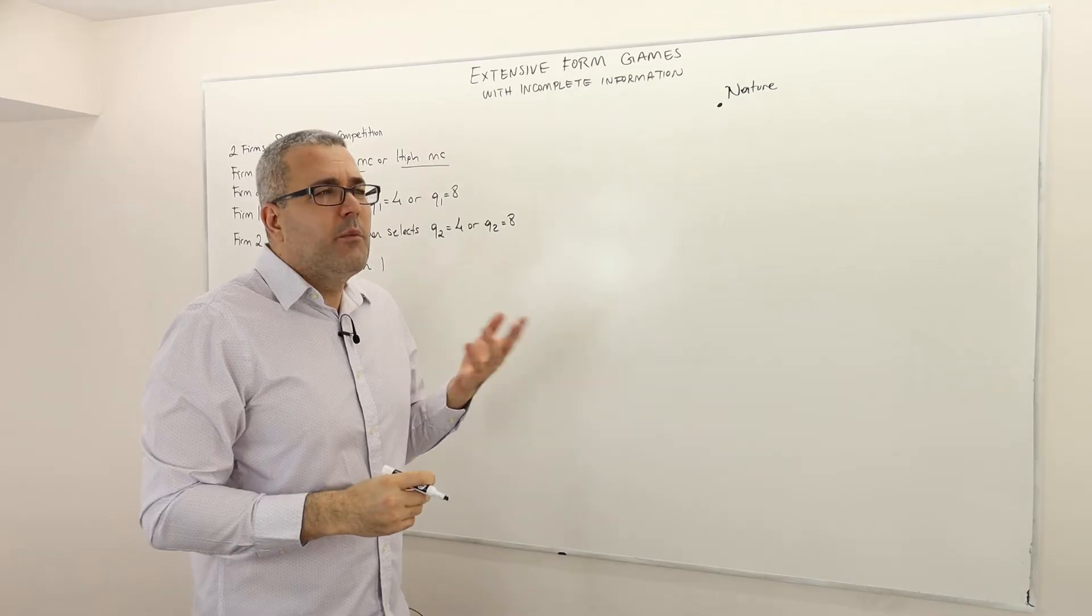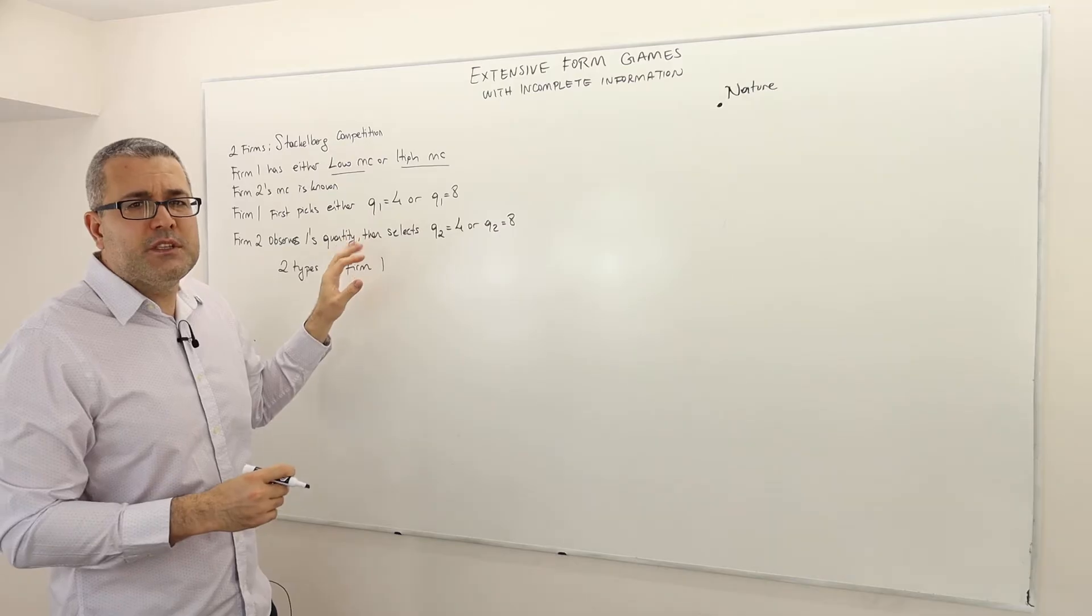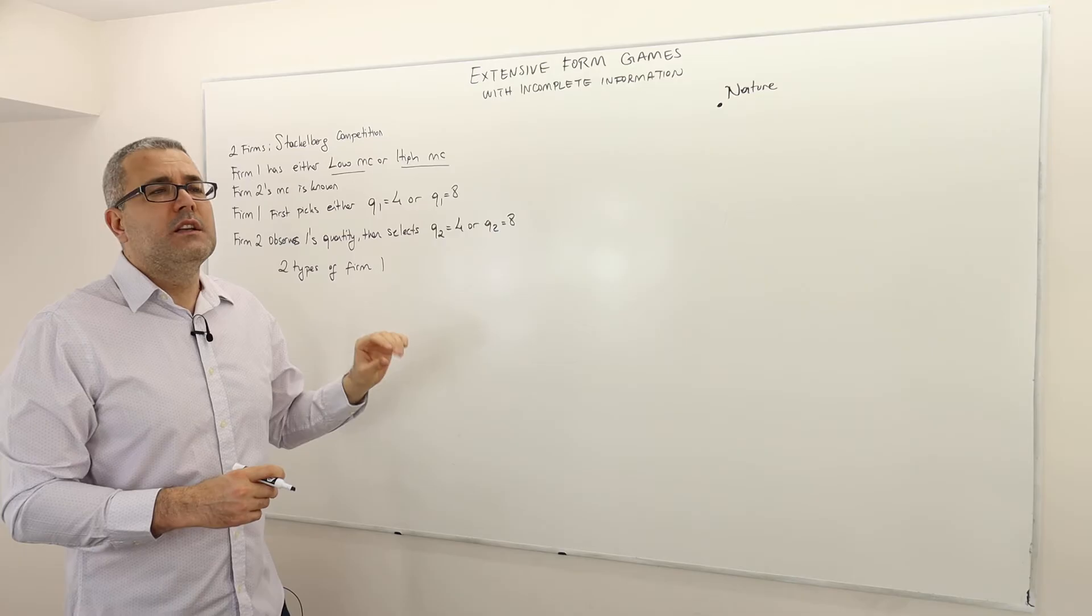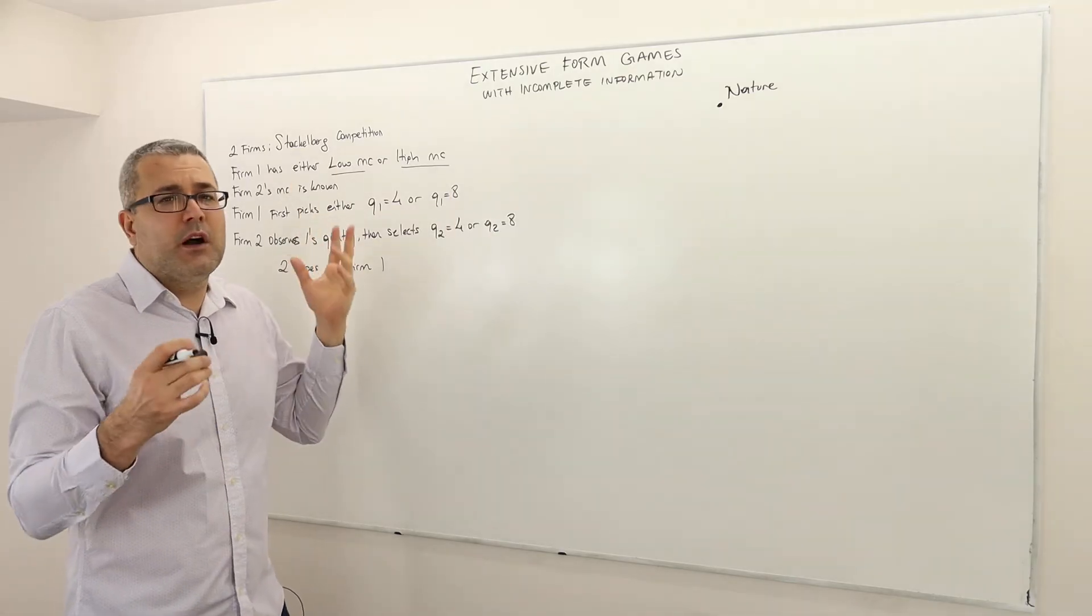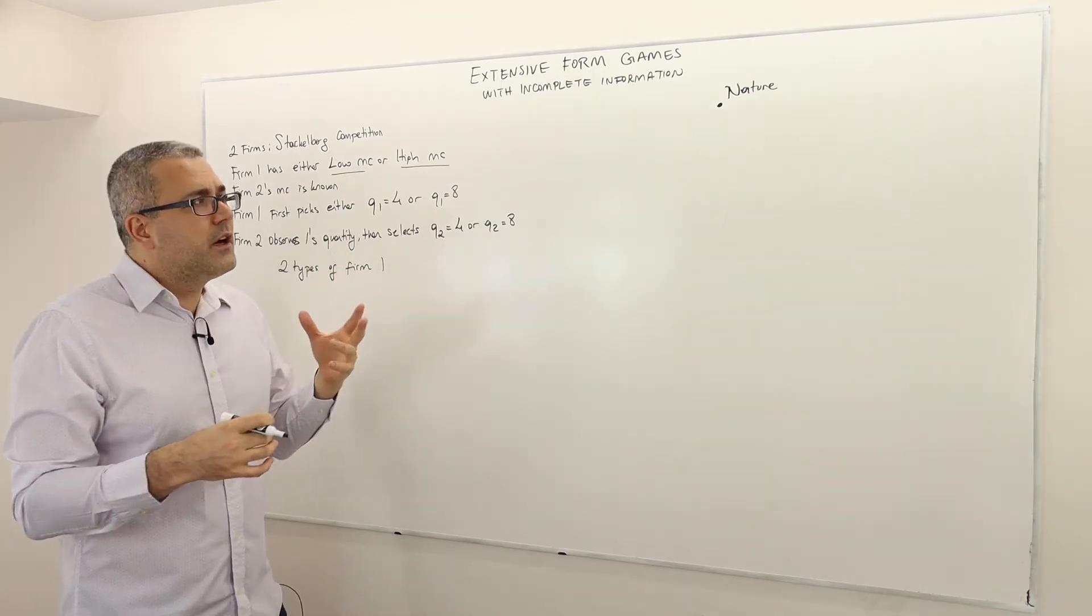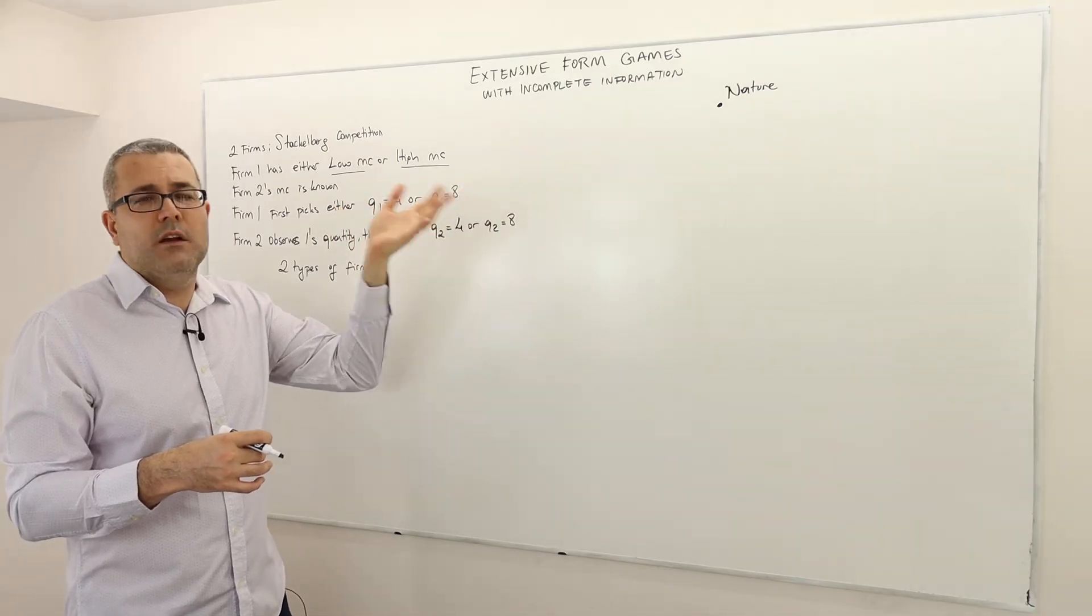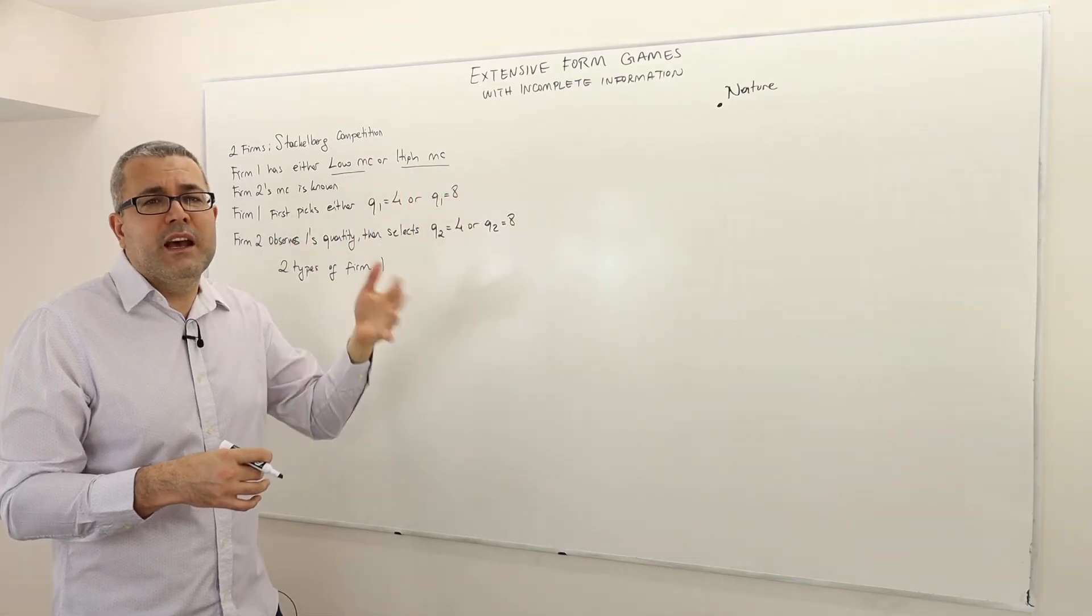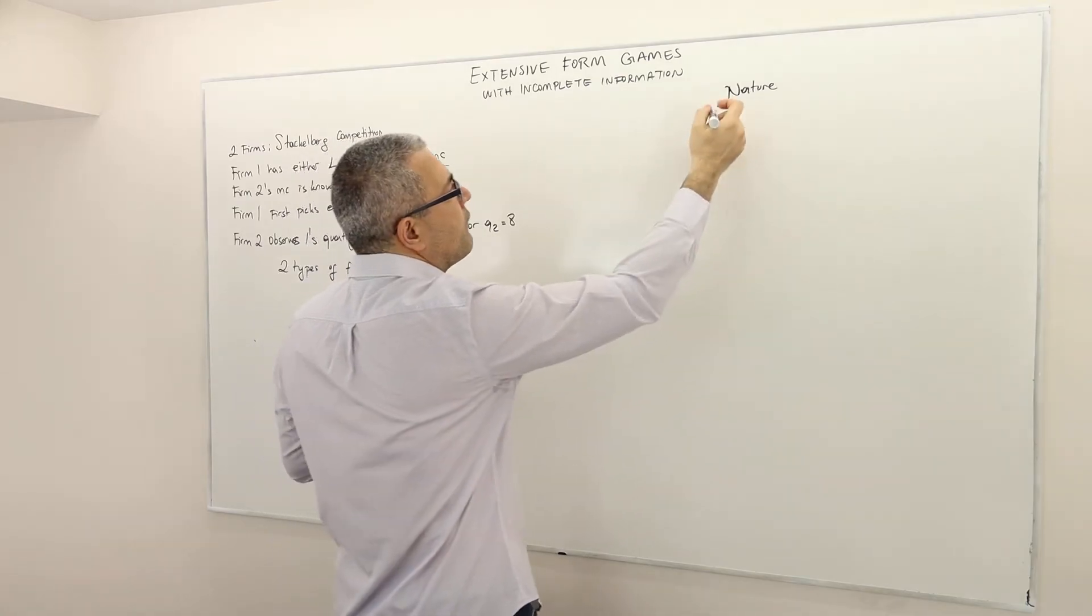So how can we model or incorporate that into the game tree? Well we can just say nature determines the type of firm 1. Well why nature? Because I just want to focus on these two firms and only these two firms' quantity choices. The type choice is not part of this question. Maybe it is part of another broader question but not this one. So therefore I assign some sort of hypothetical player and I call it nature, and I am going to ignore that player from my analysis.